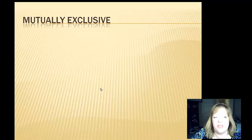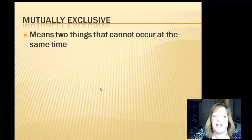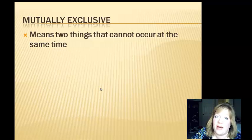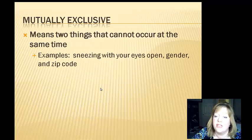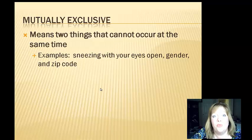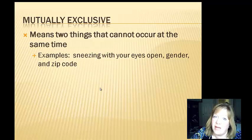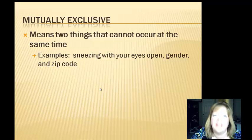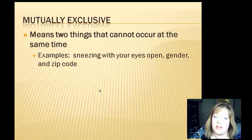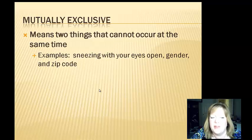There was a term in the nominal definition: mutually exclusive. It means two things that cannot occur at the same time. For example, you can't sneeze and keep your eyes open. Your gender — you cannot be male and female at the same time. And zip code — unless you're really, really fat, you can't live in two different zip codes, and I don't know anybody who does.